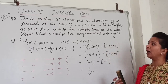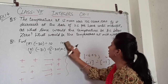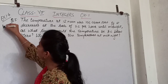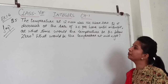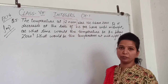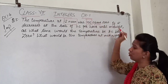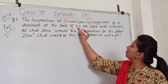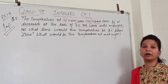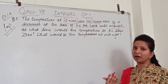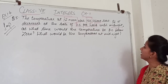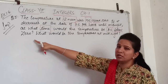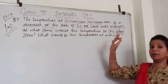Now I am starting question number 5. The temperature at 1 o'clock is minus 6 degrees Celsius — even if that is minus 6 — at a rate of 2 degrees Celsius per hour until midnight. At 12 o'clock, 2 degrees Celsius every hour per hour. The question is: at what time would the temperature be 8 degrees Celsius below zero?